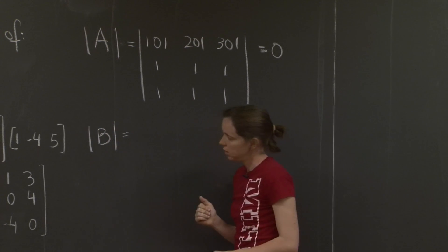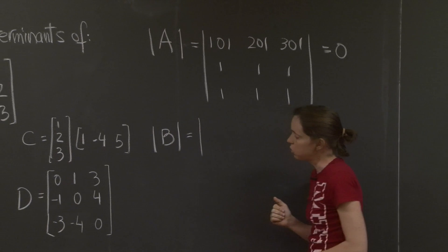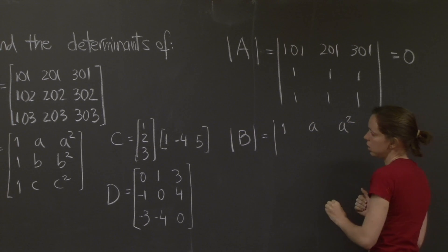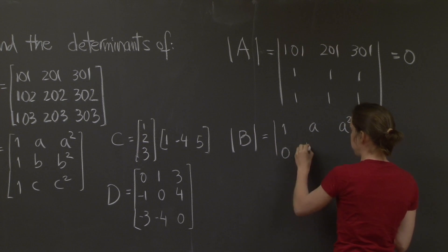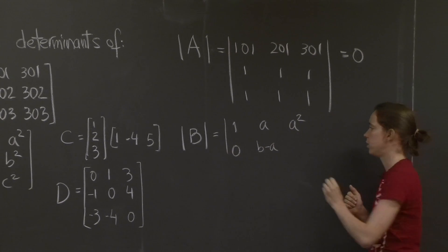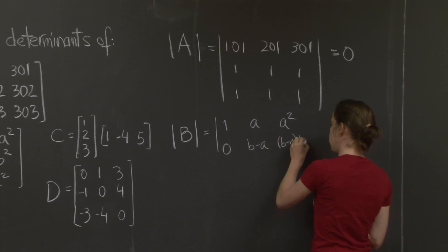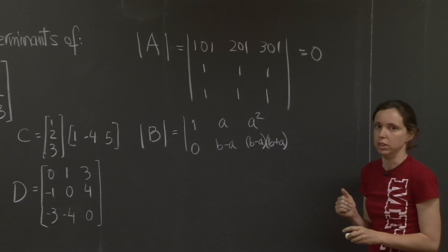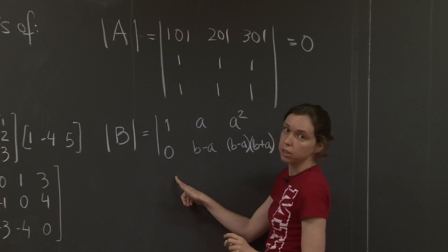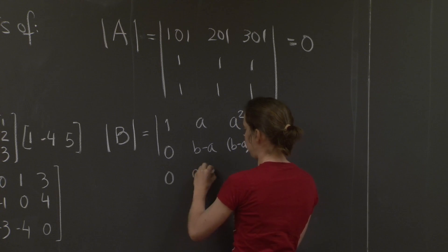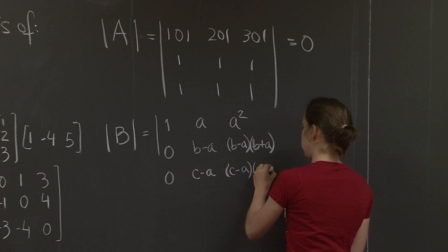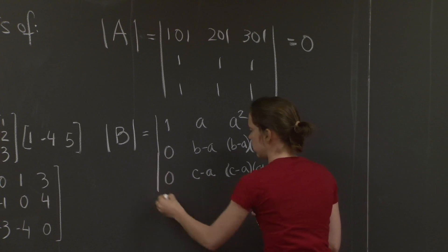Let's work on the second one. Determinant of B. Well, let's try elimination again. 1, A, A squared. 1 minus 1 is 0. B minus A. And B squared minus A squared. B squared minus A squared, let me factor that into B minus A, B plus A, which will be very convenient in the next step. And then I'm going to subtract the first row again from the third one. I'll get 0, C minus A. And again, I'll get C squared minus A squared, C minus A, C plus A.